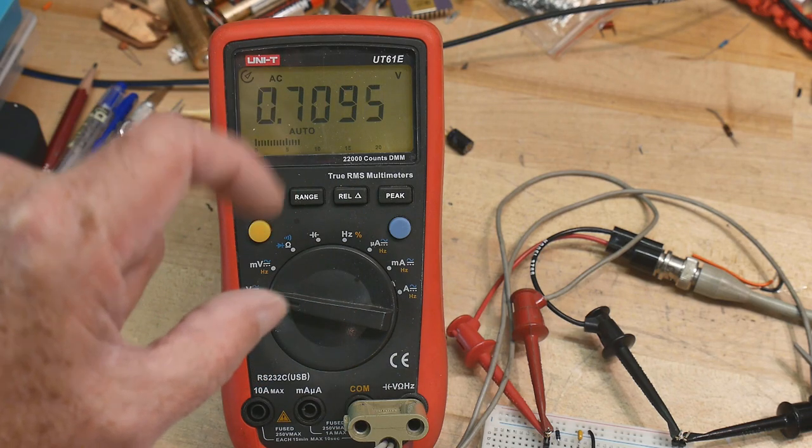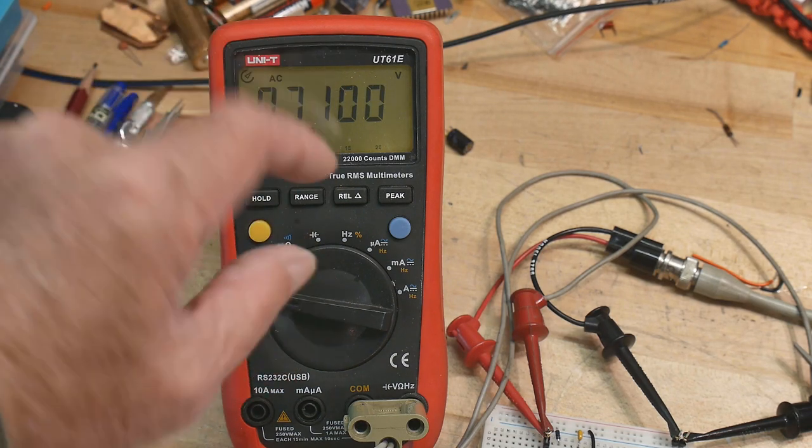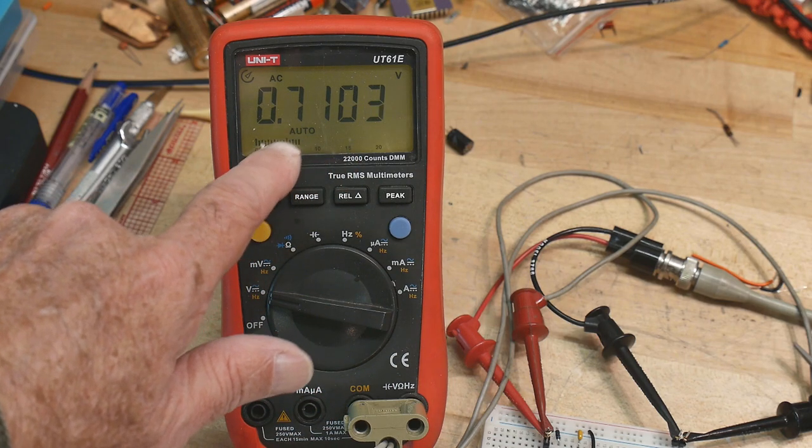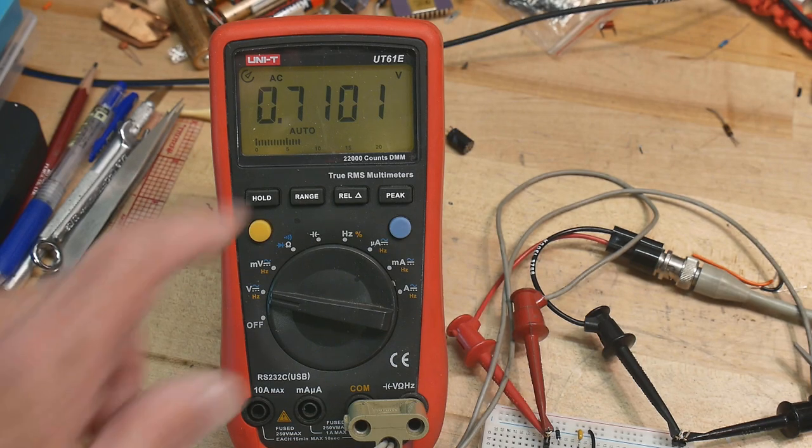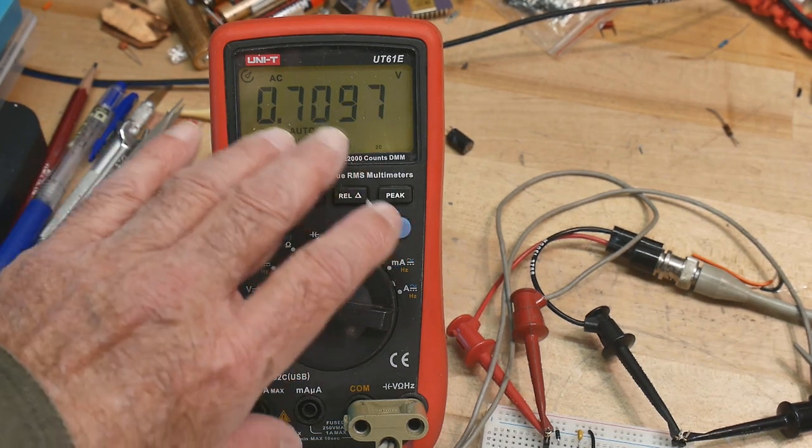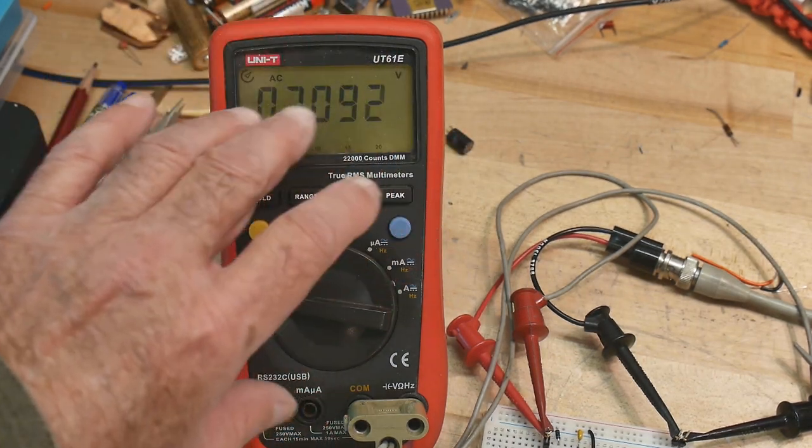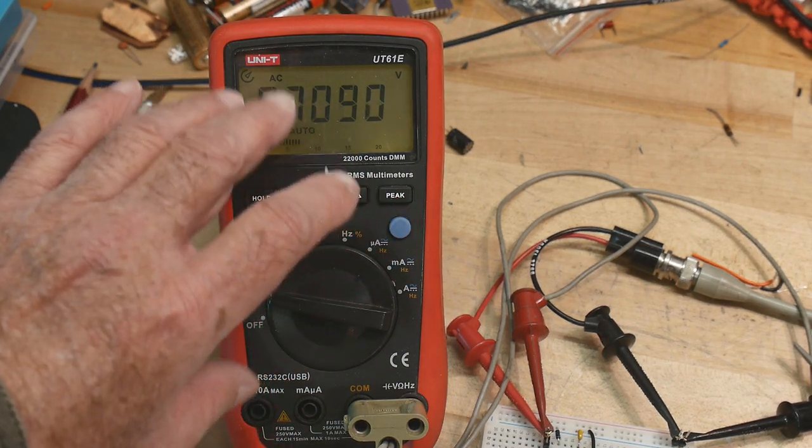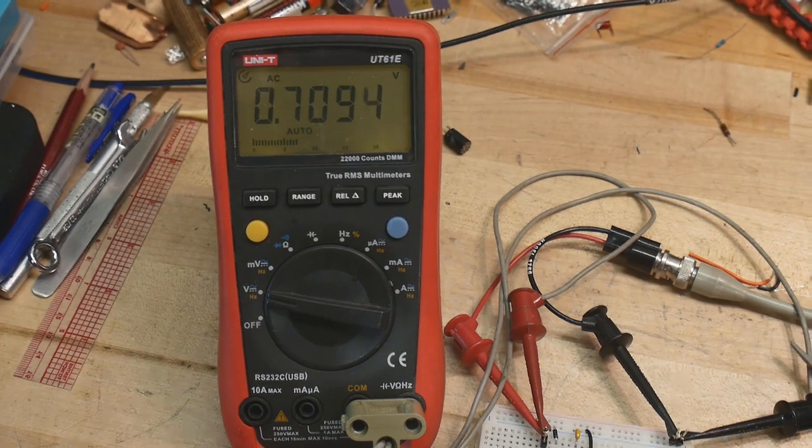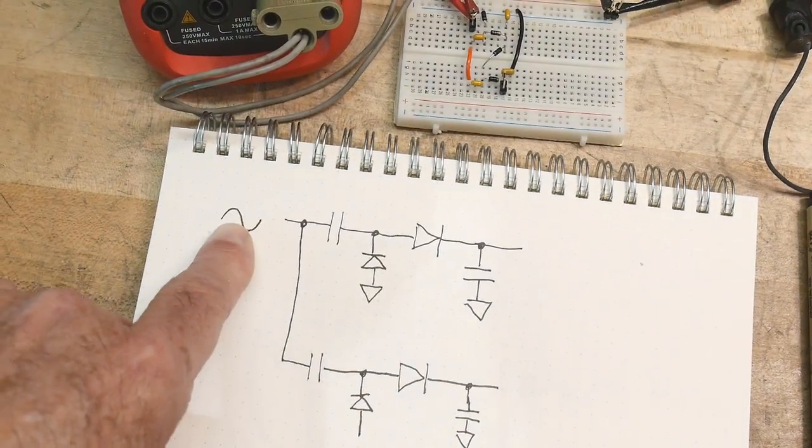And an RMS value of the peak to peak is going to be the square root of one over the square root of two. It's 0.707, right? It's half of that, right? So 0.707. So we're measuring 0.707 volts AC coming into the circuit. And so that's the AC coming in here.